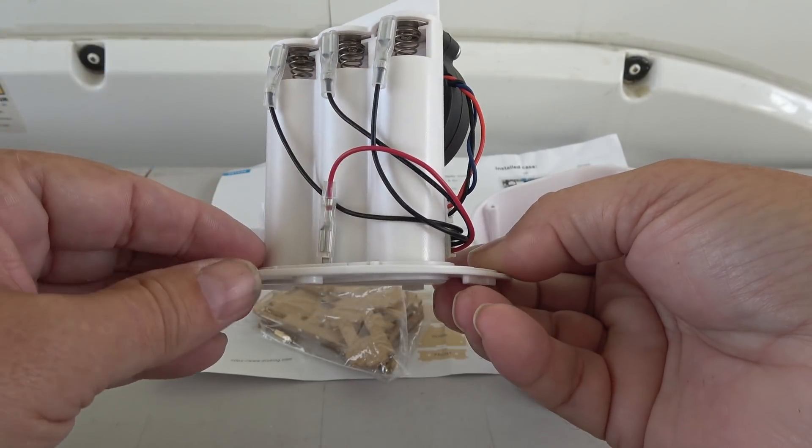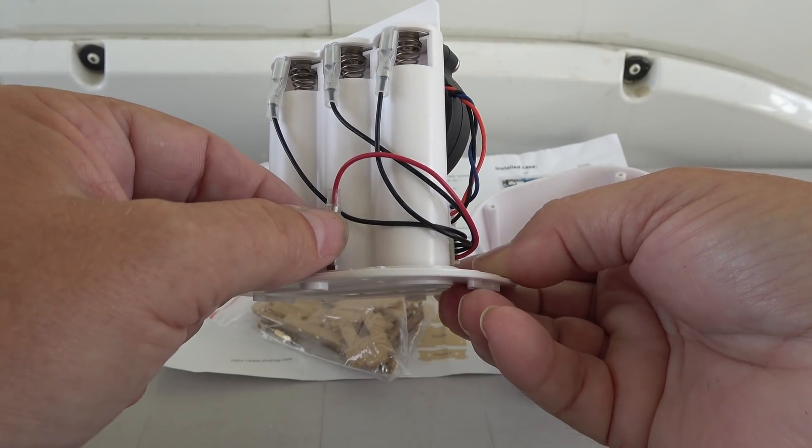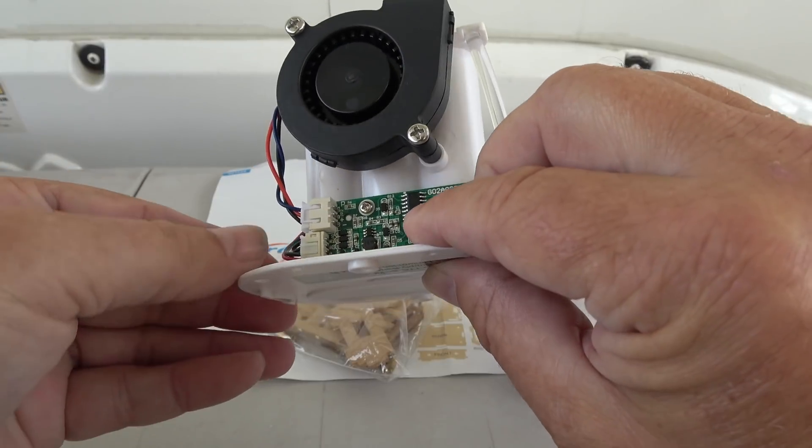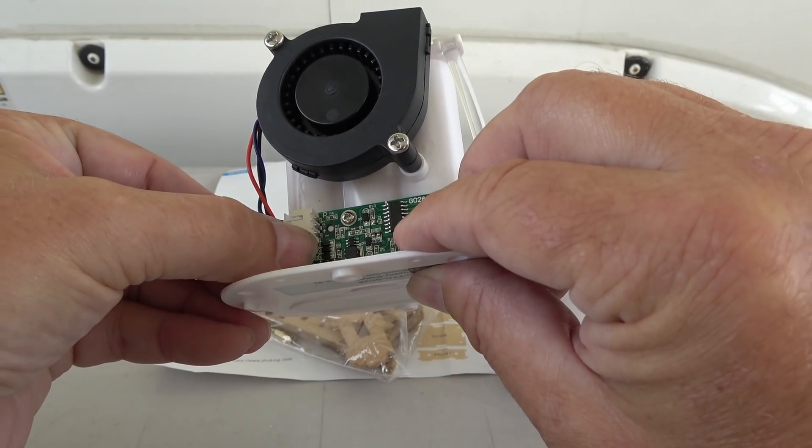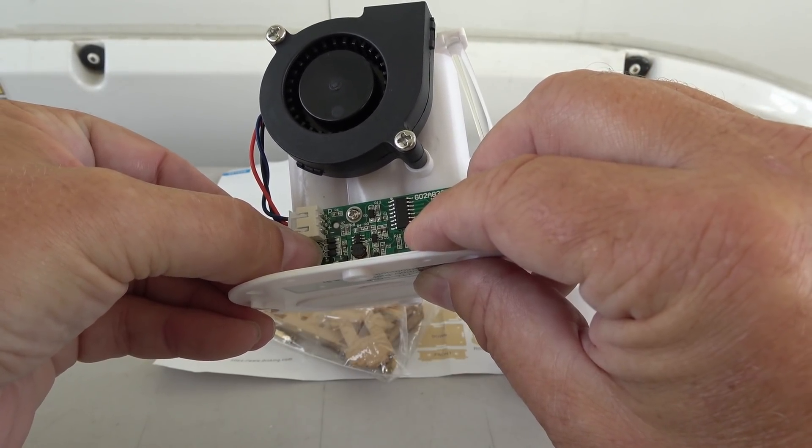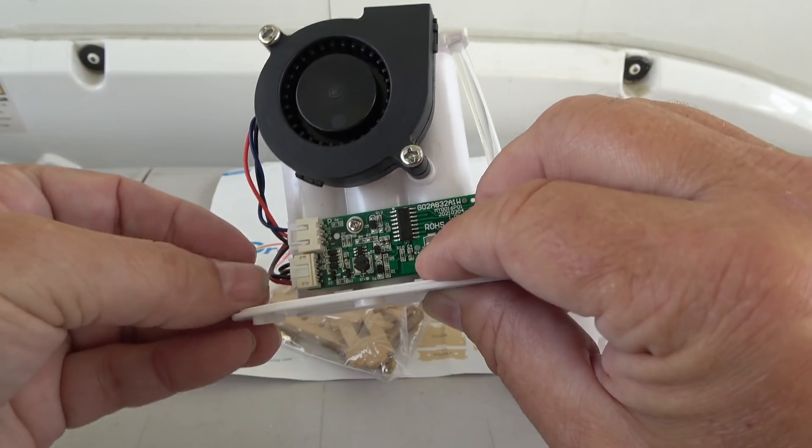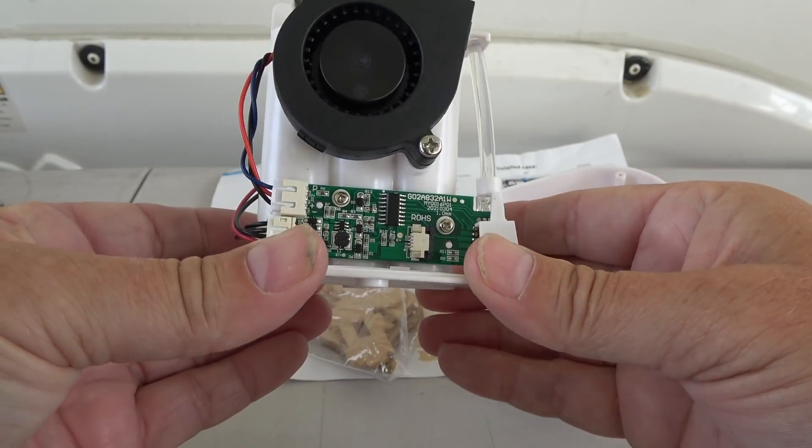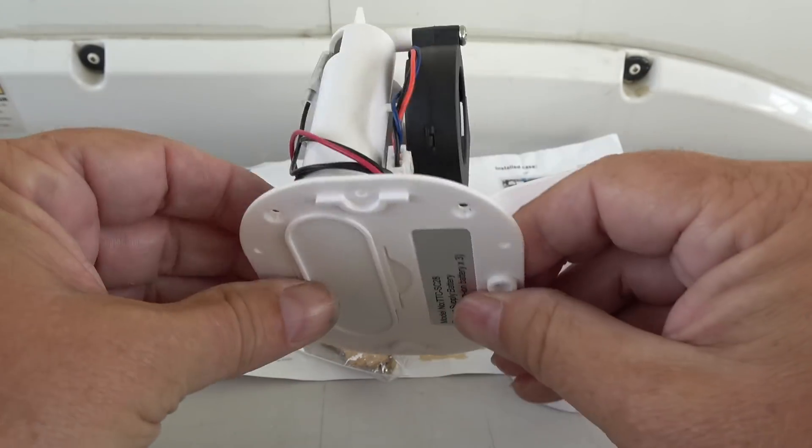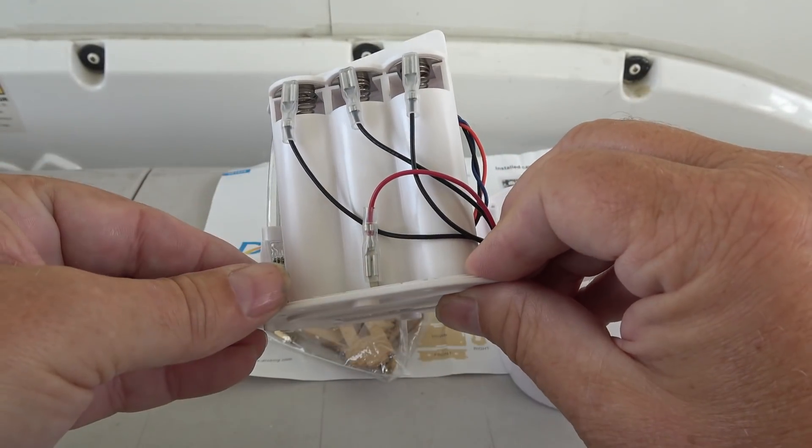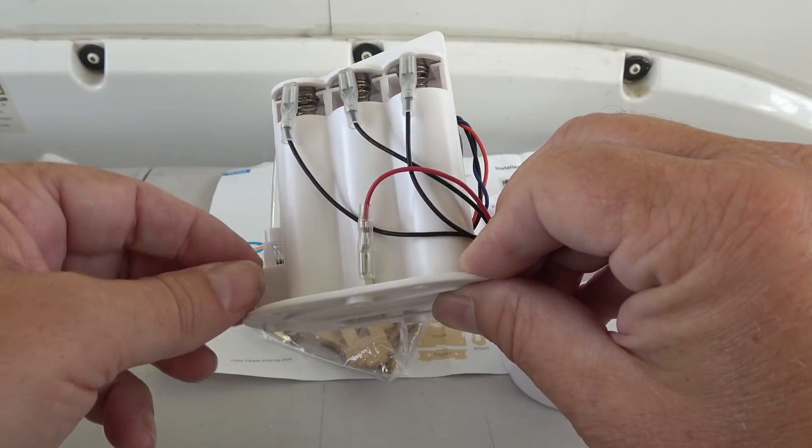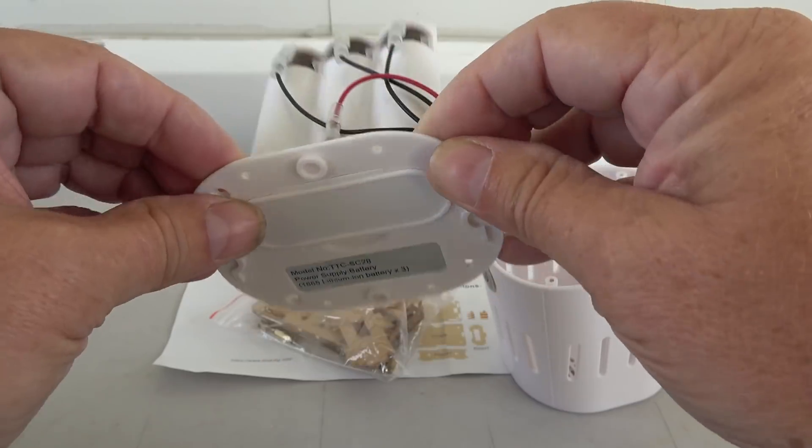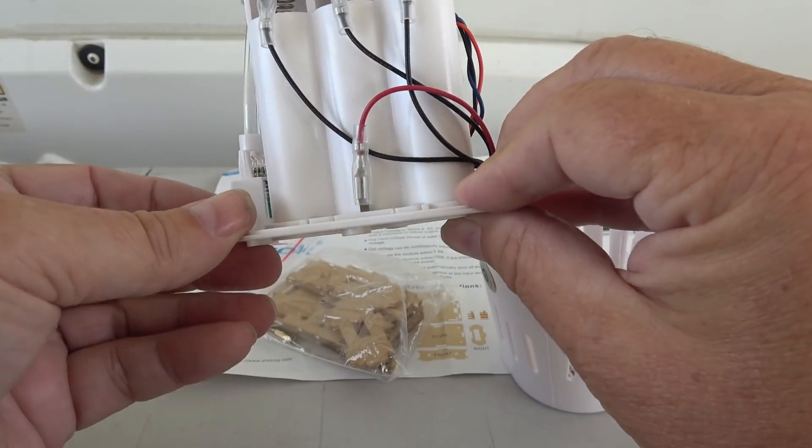So I should be able to hook in my positive and combine these negatives. They seem to go into the board right there and I can see three little small, I think they're diodes, probably protection diodes for the battery. That should power me up. So I'm gonna take my soldering iron and take this apart and solder in my wire, probably run it through the side.